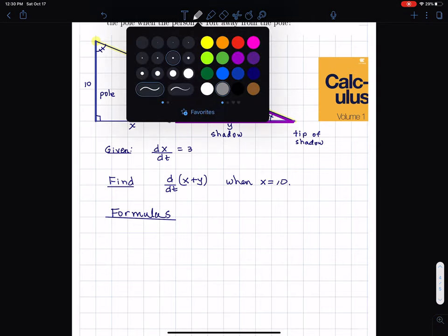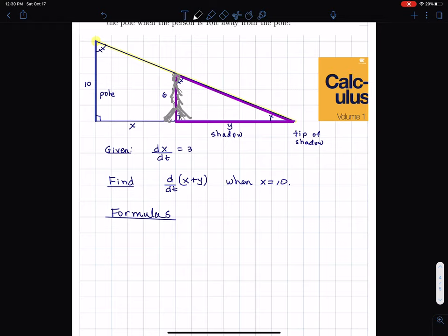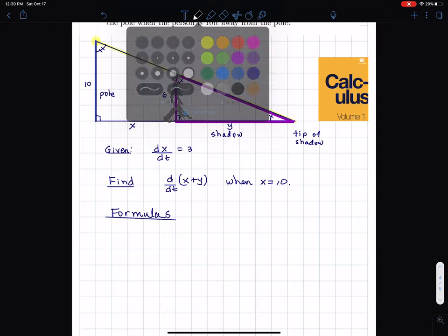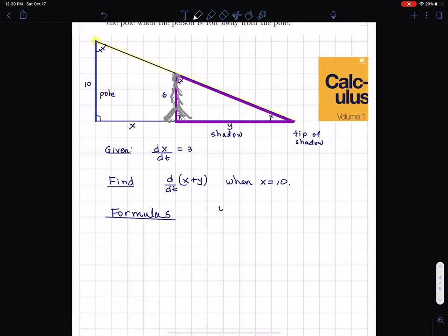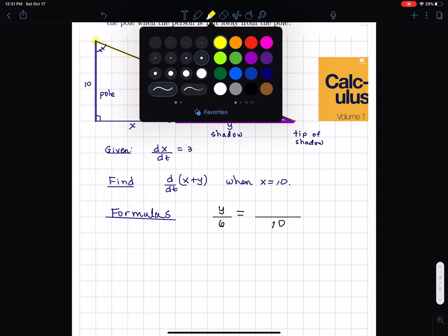So from that, what we see is that the ratio of one side, y over 6, that's the ratio of the two sides of the right triangle. Well, that should equal the ratio of the sides of the larger triangle. Now, six will correspond to 10. Do you see that? So six will correspond to 10. What does y correspond to?